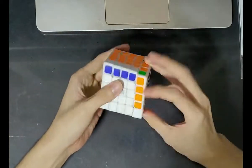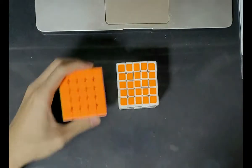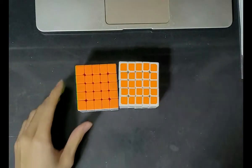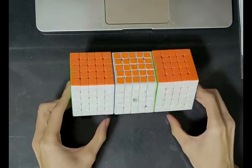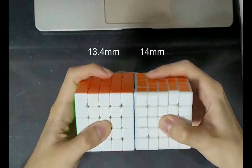This cube has an extremely sandy feel. The cube itself measures 61 millimeters across, making it smaller than both the Aochuang GTS M and the Valk. The outer layers, however, are actually bigger than either of those cubes.